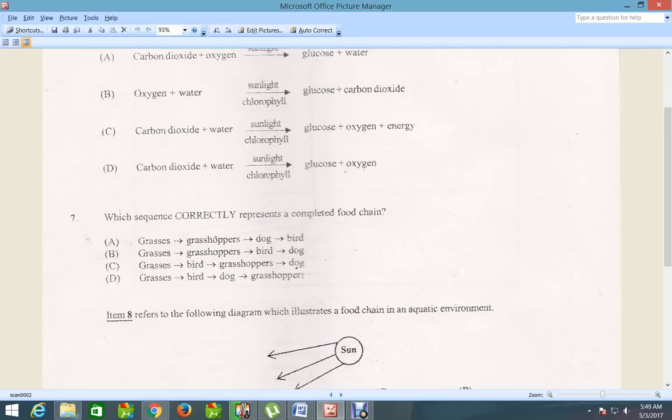Which sequence correctly represents a complete food chain? Let's see, we have all of the food chains starting with grass. We have grass, dog, then bird for B. Grass then grasshopper, bird, dog. So this one is the correct answer which is B.